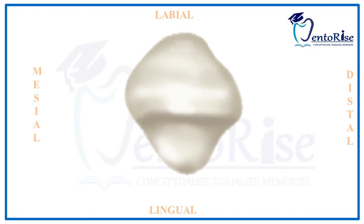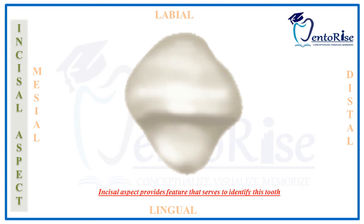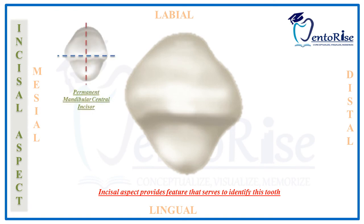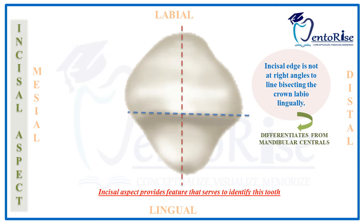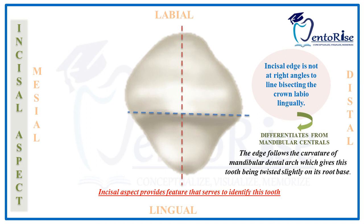Coming to the last and most important aspect in the anatomy of the permanent mandibular lateral incisor — the incisal aspect. This aspect provides the most characteristic differentiating feature which helps us compare the anatomy of a mandibular lateral incisor from that of the mandibular central incisor. In the incisal aspect of a permanent mandibular central incisor, the incisal ridge is at right angles to the line bisecting the crown labiolingually. However, in the permanent mandibular lateral incisor, the incisal ridge is not at right angles to that line, as you can see in the figure. This edge follows the curvature of the mandibular dental arch, which gives the crown of the mandibular lateral incisor the appearance of being slightly twisted on its root base.